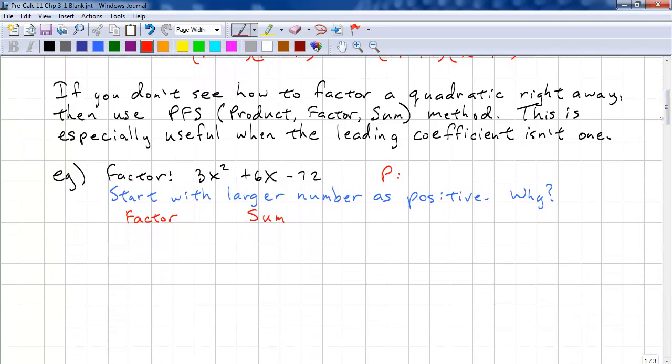If you don't see how to factor a quadratic right away, then use PFS, Product Factor and Sum. This method is especially useful when the leading coefficient isn't 1. Recall that the coefficients are lettered A, B, C, and the product is 3 times -72, and that is -216. This is A times C. We start with the larger number as positive. Why? Because our sum is positive, so the bigger number minus the smaller number will give us a positive.